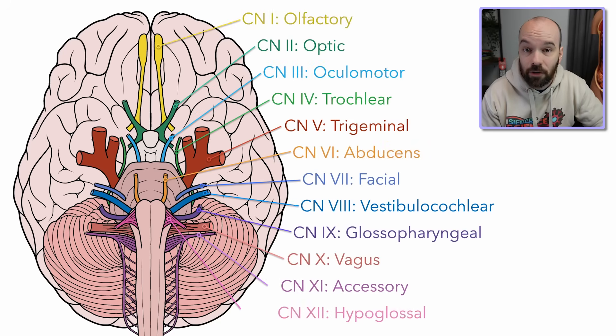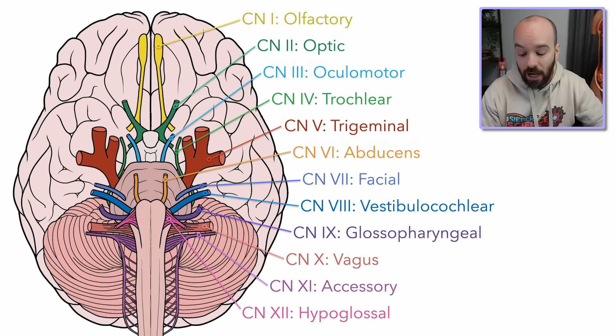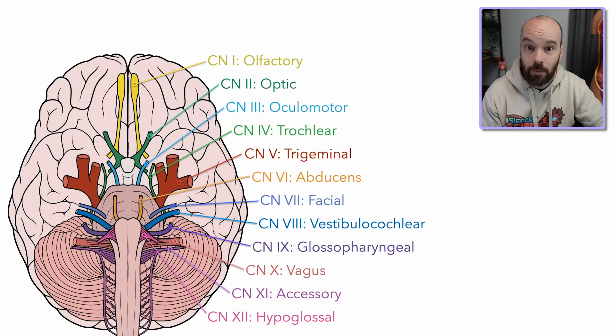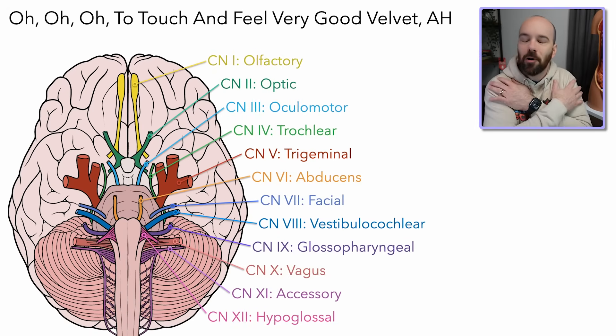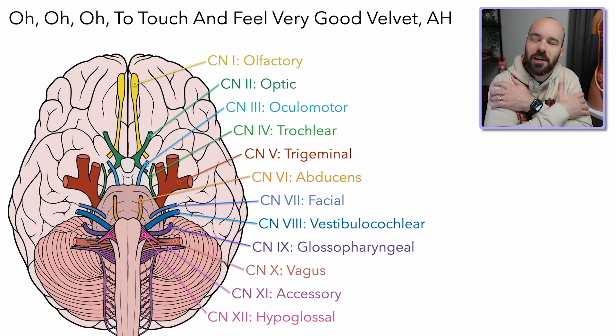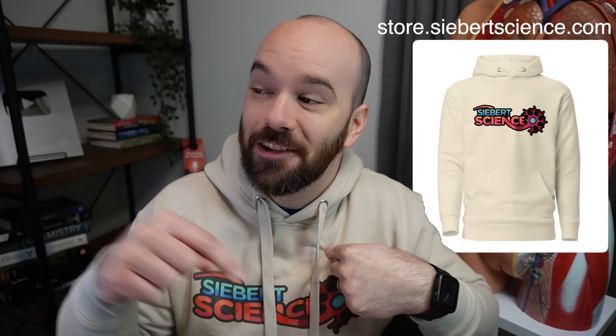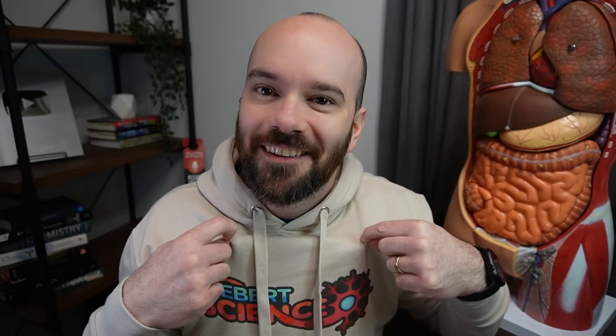Here are the names of the 12 cranial nerves. We have an acronym that's going to help us remember all of those: OOO to Touch and Feel a Very Good Velvet. Now, I don't actually have a piece of velvet here, but I do have this Siebert Science sweatshirt, which is very soft and velvety.